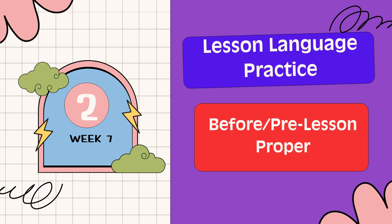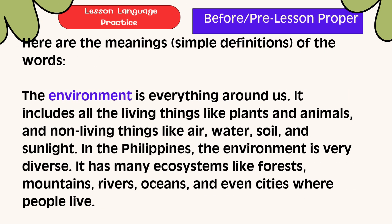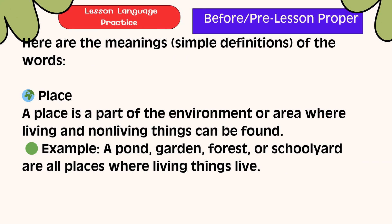Lesson Language Practice. The environment is everything around us. It includes all the living things like plants and animals, and non-living things like air, water, soil, and sunlight. In the Philippines, the environment is very diverse. It has many ecosystems like forests, mountains, rivers, oceans, and even cities where people live.